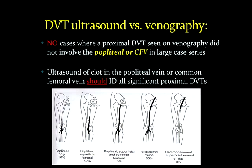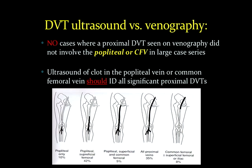Typically a full technologist scan takes upwards of half an hour. In a large case series of greater than a thousand patients suspected of having a DVT, all of whom underwent venography, there were no cases where a proximal DVT was seen on venography that did not involve at least the popliteal or the femoral triangle. So ultrasound of the clot in the popliteal vein or the common femoral vein should identify all significant proximal DVTs. There were no DVTs in this study for more than a thousand patients who had an isolated DVT in the mid-thigh.